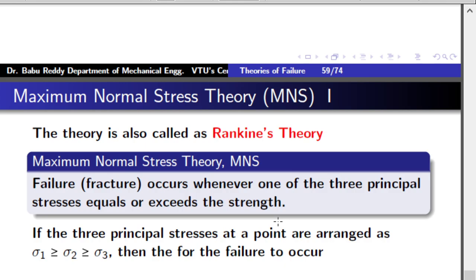The first theory is the simplest one. It is called maximum normal stress theory, also known as Rankine's theory. The basic idea is that failure or fracture occurs whenever one of the three principal stresses equals or exceeds the strength. Strength here means the maximum normal stress of the material at the time of its failure in a tensile test or in compressive stress.